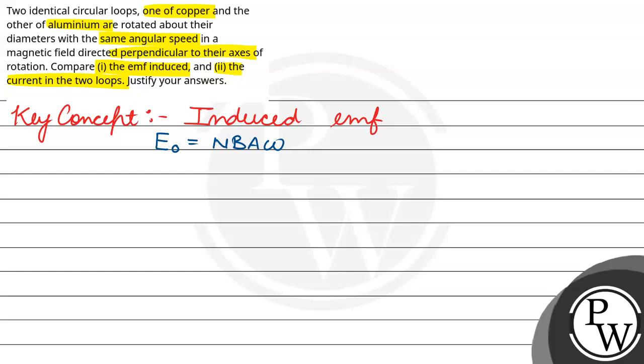So according to the question, we have two identical circular loops. Identical means the area of cross section A is the same. They are rotated about their diameter with same angular speed, so omega is the same. In a magnetic field directed perpendicular to the axis, magnetic field B is the same. And the number of turns N is the same. So we can see that for aluminum and copper, all parameters are the same.